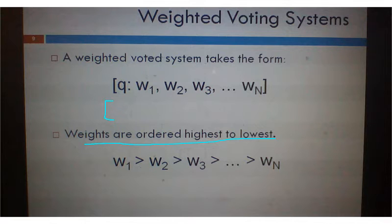Let's say in a system we need 15 to pass. And maybe our system looks like this, where the weight of player 1, let's say player 1 has 9 votes, player 2 has 5 votes, player 3 has 3 votes,